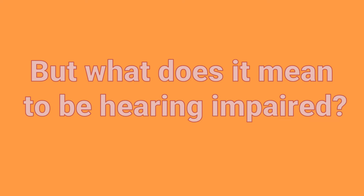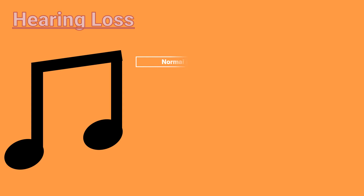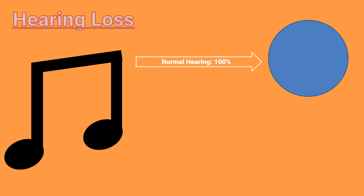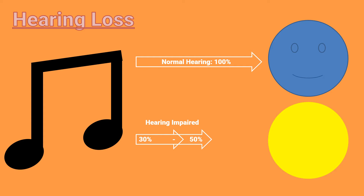But what does it mean to be hearing impaired? Here's a simple example of what hearing loss is. For people with normal hearing, we say that they hear 100% of the sound. For people who are legally hearing impaired, we say that they hear around 30–50% of the sound.